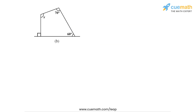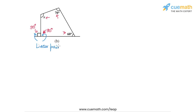Now let's do part b. In part b we have a quadrilateral in which two of the interior angles are known: 60 degrees and 70 degrees. There is the unknown angle x, and we don't know the fourth angle directly. However, the angle to the left is given as 90 degrees, which means the angle on the other side will also be 90 degrees because these two angles form a linear pair of angles.